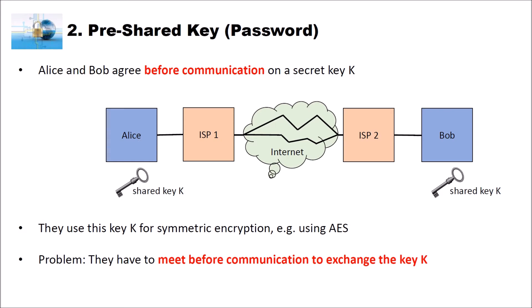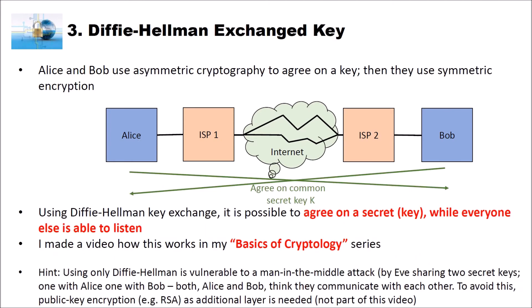To tackle the problem of meeting before communication, we have another possibility: Diffie-Hellman key exchange. Alice and Bob use asymmetric cryptography to agree on a key, and then they use symmetric encryption based on this agreed key. Instead of directly communicating over the internet, they first use Diffie-Hellman and agree on a common secret key K. This is possible while everyone is listening. As I already said, you should have a look at my video about Diffie-Hellman key exchange, made in the basics of cryptology series.